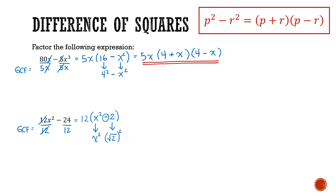So indeed the difference of squares applies to x squared minus 2. We have 12 times two brackets: one with a plus and one with a minus. The first term in each bracket is the square root of x squared, which is x. The second term is the square root of 2, written as the square root of 2. That's the final answer: 12 times the quantity x plus square root of 2 times x minus square root of 2.